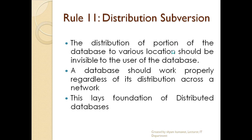Rule number 11 is Distribution Independence. The distribution of portions of the database to various locations should be invisible to the users of the database. The data should appear to the user as if it is available in a single location, regardless of where it is actually stored.